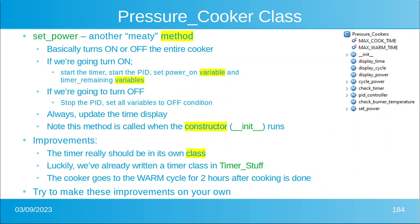Set power is another one of those meaty methods. It has a few lines, but it basically turns on or off the entire cooker. If we're going to turn it on, you've got to start a timer, start the PID, set the variables for power, set the timer, and all that. If we're going to turn it off, then we have to do all of that again, but in the off method. We're always going to update the time display whenever we hit set power.